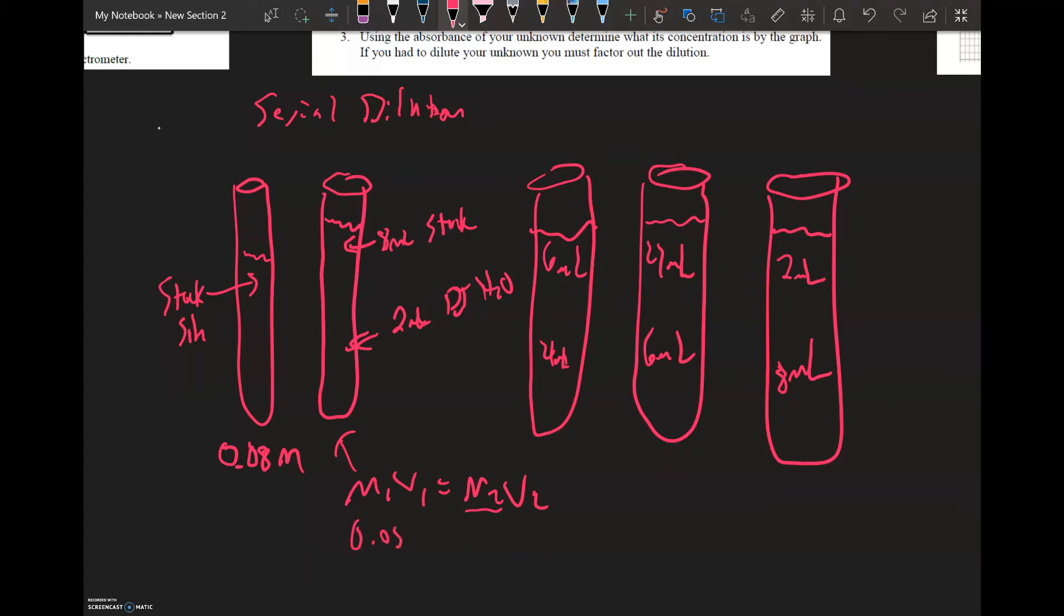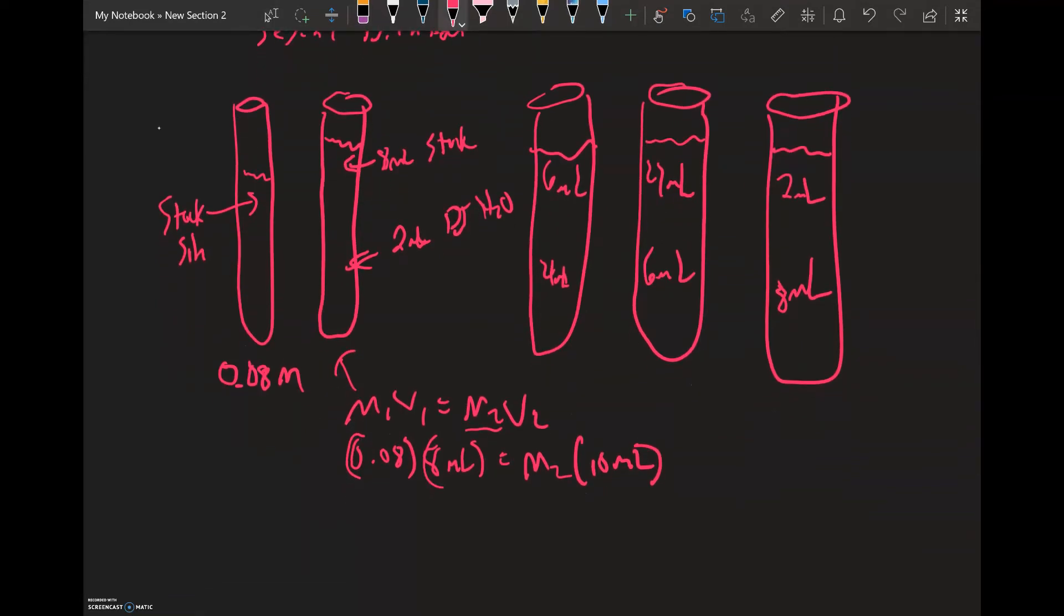M1 is always going to be 0.08 because that's your starting concentration. V1 represents the volume of stock solution that you put into each test tube. So in this first example, you have eight milliliters of the stock. Our goal is to solve for M2. V2 is just the total volume of the solution. So eight plus two gives me 10 milliliters. It's quite easy to do this. It's just simple algebra. You'll multiply the two together, 0.08 times eight, then divide it by 10. And you'll get some concentration for your second reference solution.